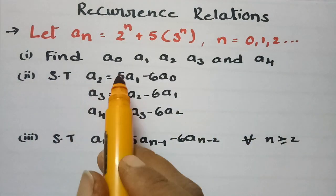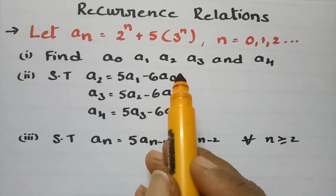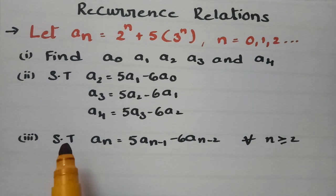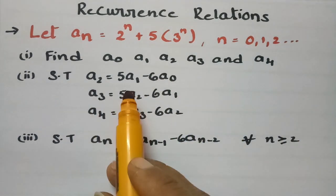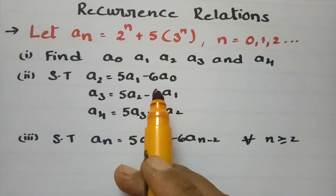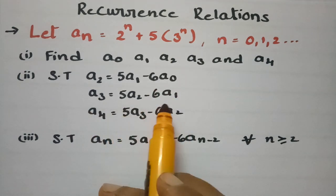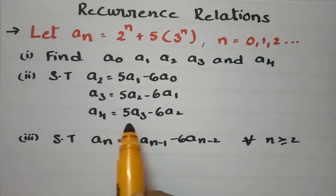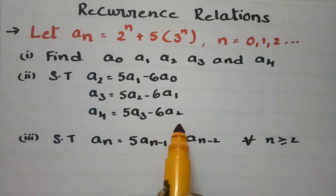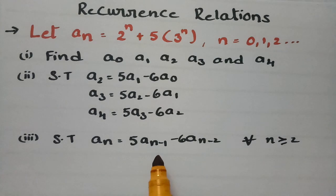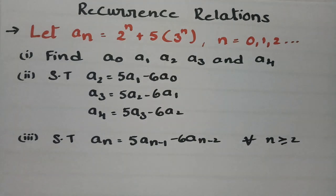First of all we have to find a_0, a_1, a_2, a_3 and a_4. Next we have to show that a_2 equals 5a_1 minus 6a_0, a_3 equals 5a_2 minus 6a_1, and a_4 equals 5a_3 minus 6a_2. Also we have to show that a_n equals 5 times a_{n-1} minus 6a_{n-2}.